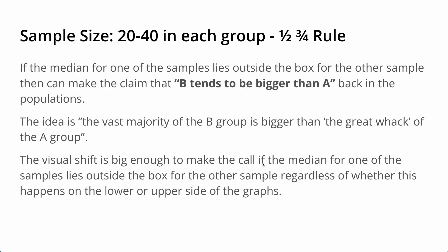If we have a smaller sample size — for example 20 to 40 in each group — we use the half three-quarter rule. This rule says that if the median for one of the samples lies outside the box for the other sample, then you can make the claim that B tends to be bigger than A back in the population. You only need one of the medians to lie outside the box, regardless of what's happening with the other median.